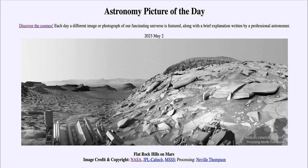One thing we know is that Mars does not have running water currently on its surface, but we do know that Mars has wind — very high winds that are very good at picking up dust grains from the ground. In fact, Mars can have planet-wide dust storms, not just covering a small portion but covering the entire surface.